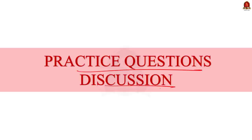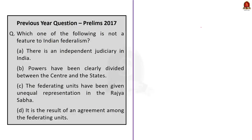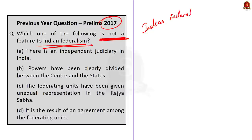Look at this question from the 2017 prelims: 'Which one of the following is not a feature of Indian federalism?' Since we discussed the unique features of Indian federalism in detail today, you can easily answer this question from that discussion. The answer is Option D. The question asks which is NOT a feature, and option D — 'It is the result of an agreement among the federating units' — is wrong.